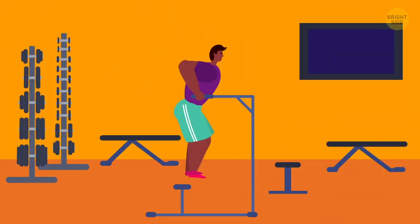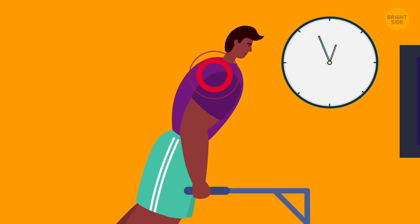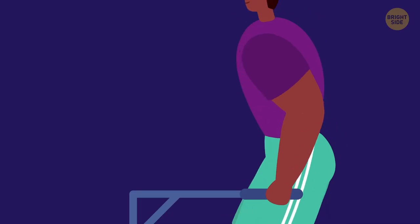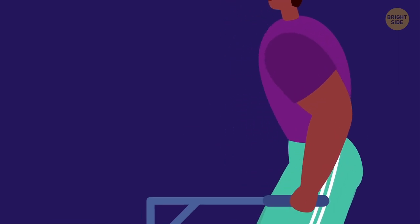If you go too low while doing dips on parallel bars, you put too much pressure on your shoulders, and it can lead to muscle damage. Try not to go lower than when your upper arms are parallel to the ground.